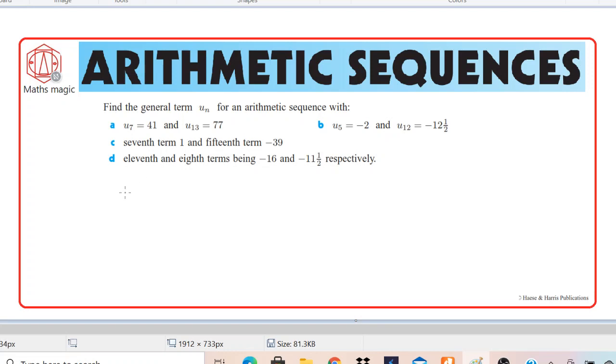So let's start with part A. In part A, you are given two pieces of information: U7 and U13. So let's write that.